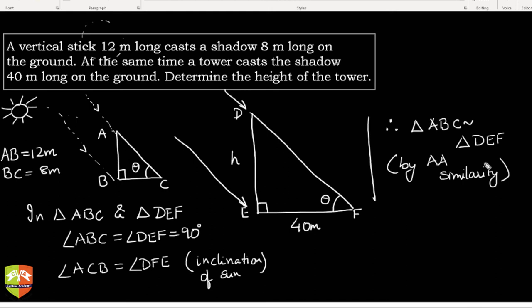DE is equal to BC by EF. Why is that? This is nothing but corresponding parts of similar triangles are proportional. So the ratio of these sides will be proportional. Now I have to find out DE. So DE clearly is equal to AB times EF divided by BC. Let us find out